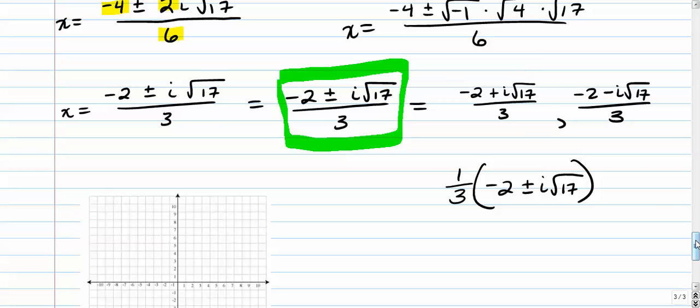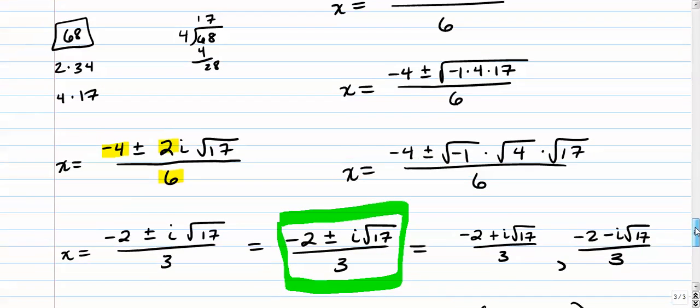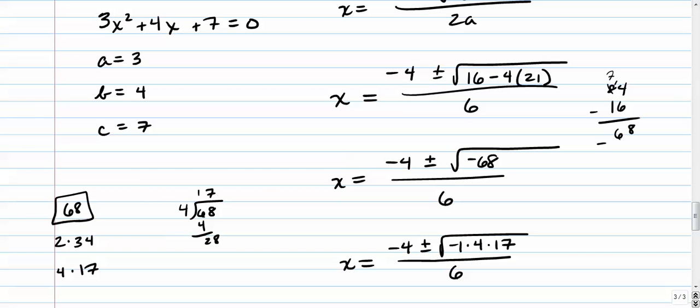So those obviously are two complex solutions. The reason they're complex solutions, again, is we want to look at this discriminant. If your discriminant is negative, we have two complex solutions.